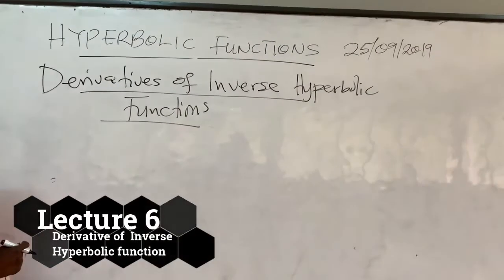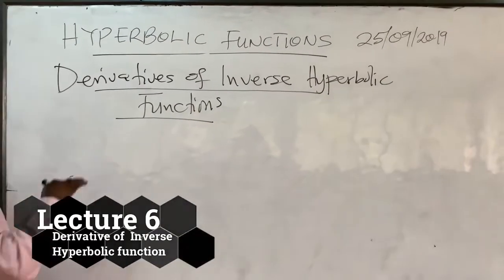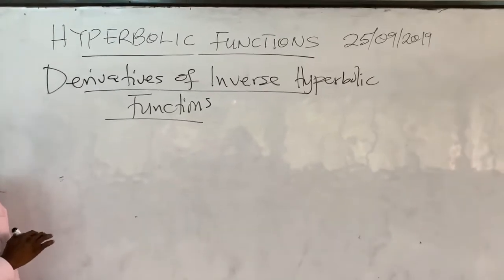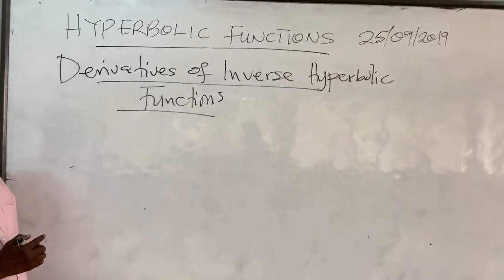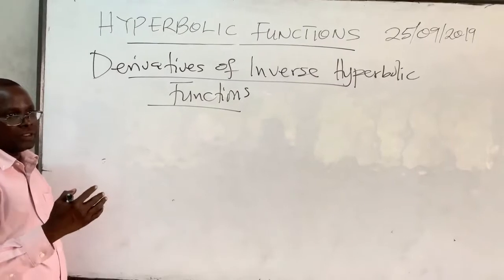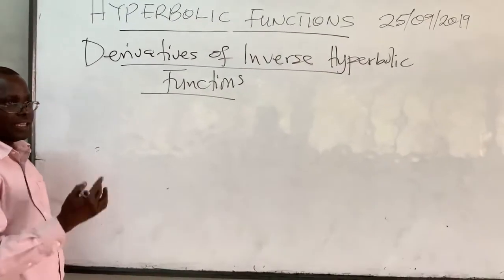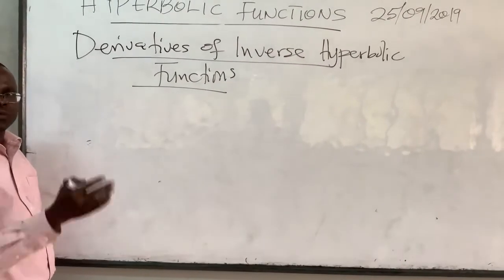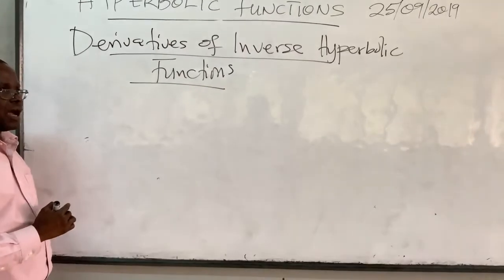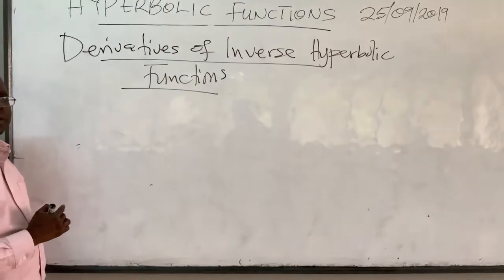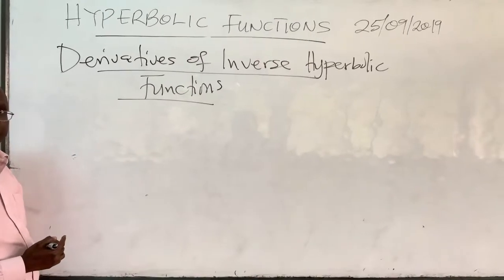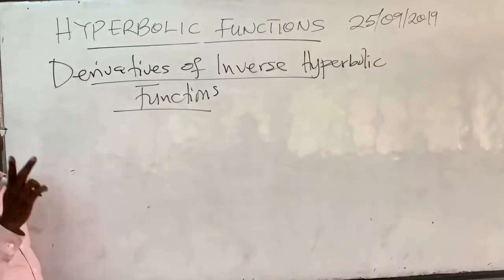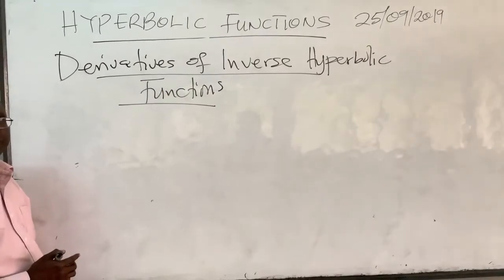We want to study and find the derivatives of the inverse hyperbolic functions. There are two ways in which you can do that. One is you can write the inverse hyperbolic function as a log function, as we did in the previous video. Or you can use implicit differentiation to find the derivatives of the inverse hyperbolic functions. So there are mainly two approaches.